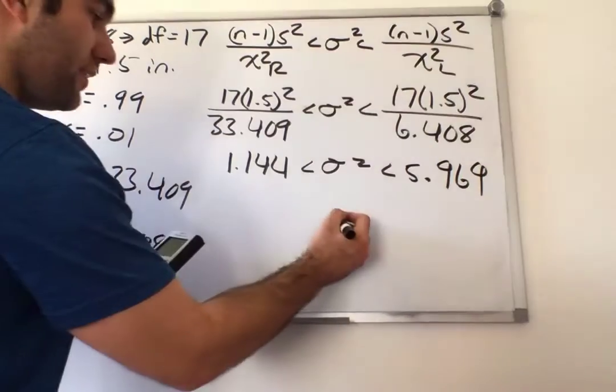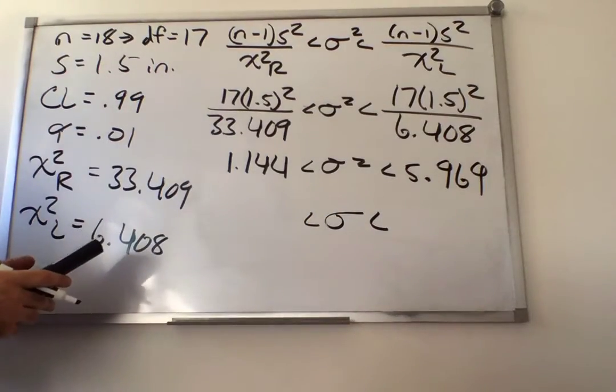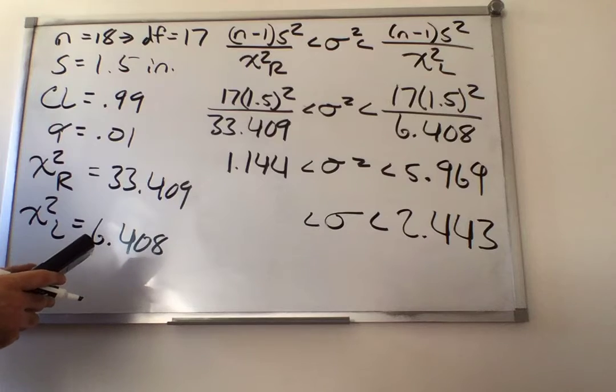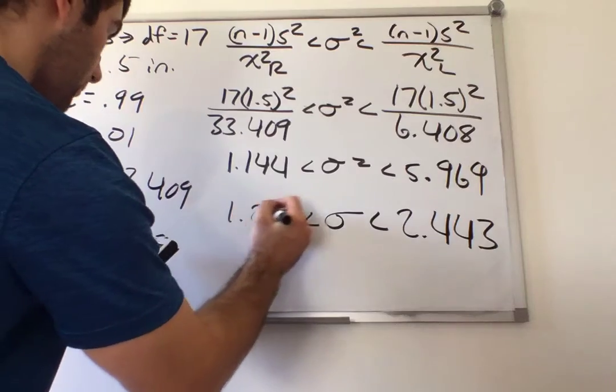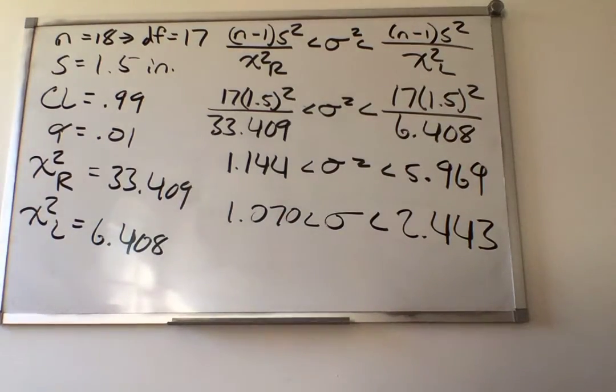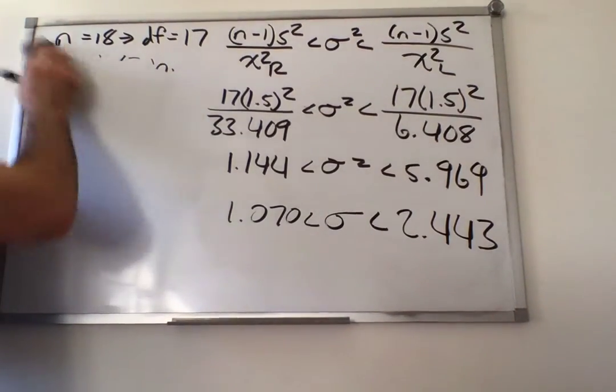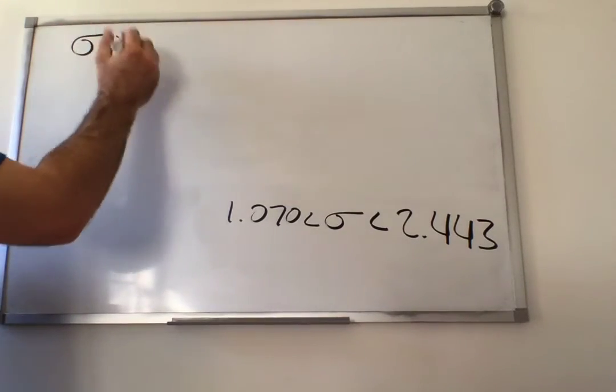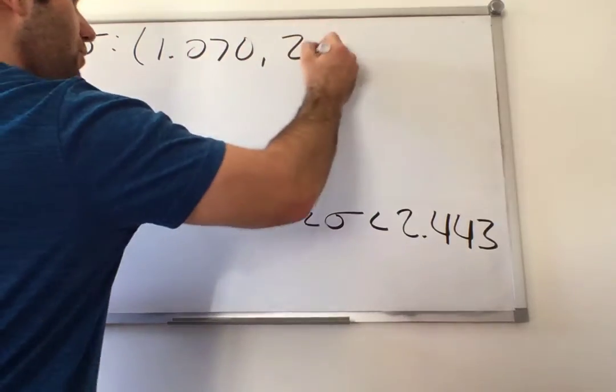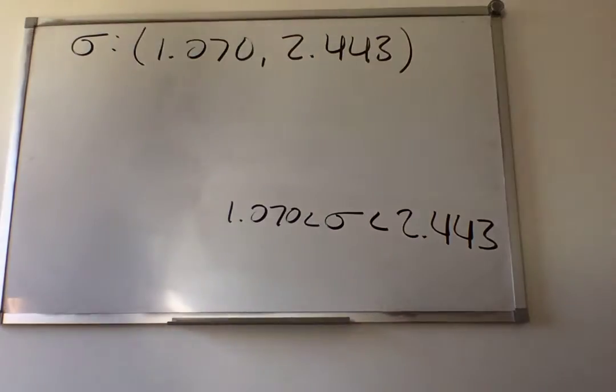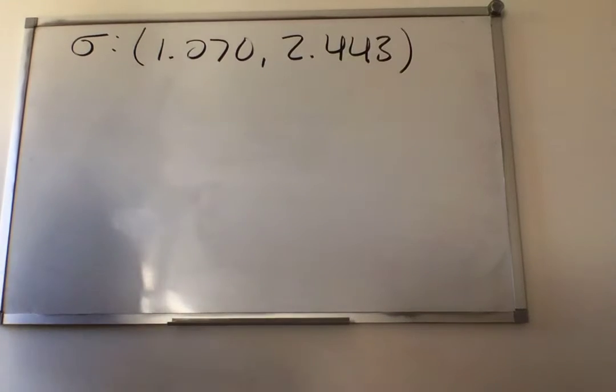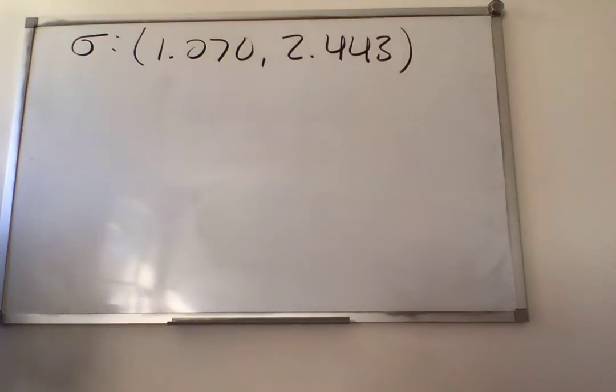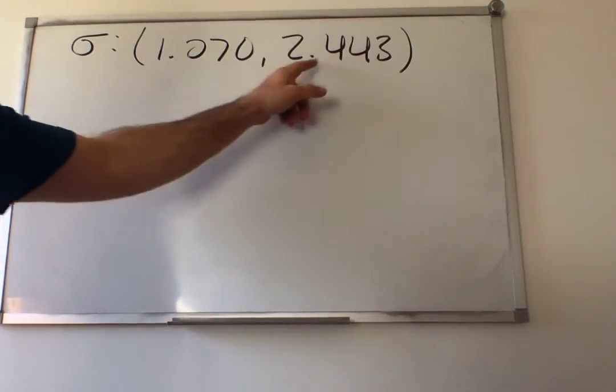And then to get the standard deviation, we just square root each one of these numbers, because that's what it's asking for. We want to construct a confidence interval for the standard deviation, and not the variance. So now we have our confidence interval for the standard deviation, it goes from 1.070 to 2.443.